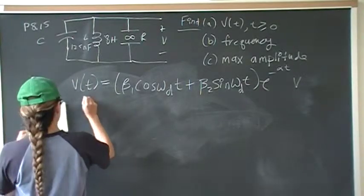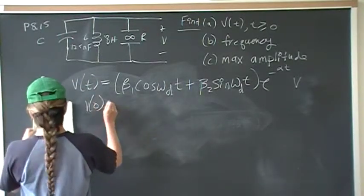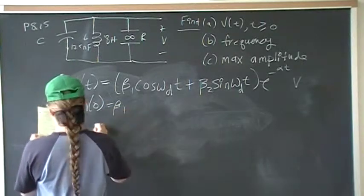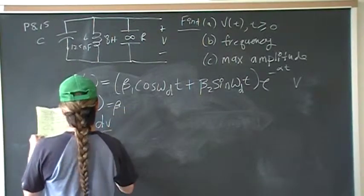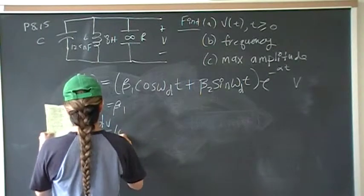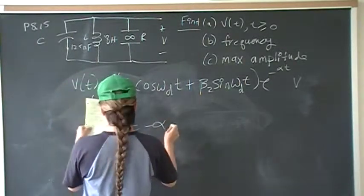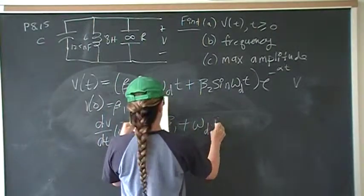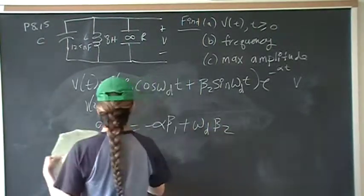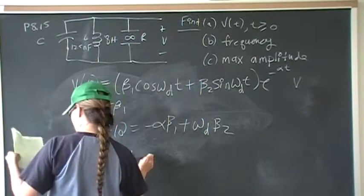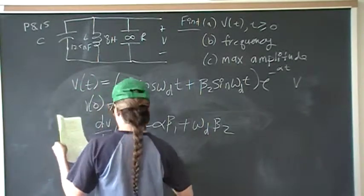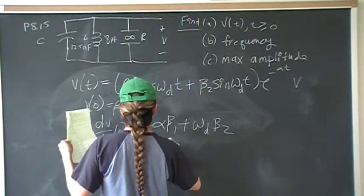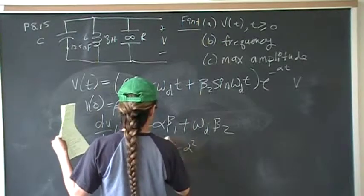And the coefficient equations are V of 0 is equal to beta 1, dV/dt is equal to negative alpha beta 1 plus omega d beta 2, and omega d is equal to root omega 0 squared minus alpha squared.